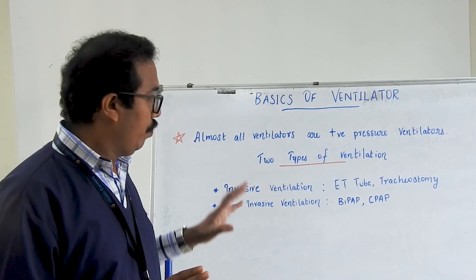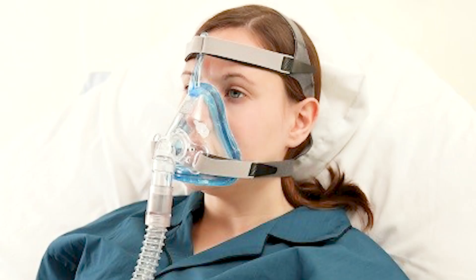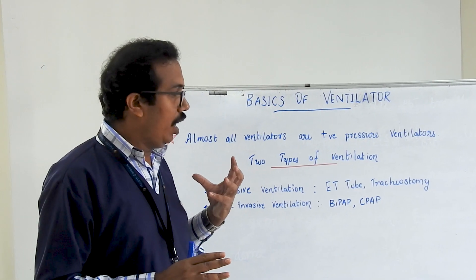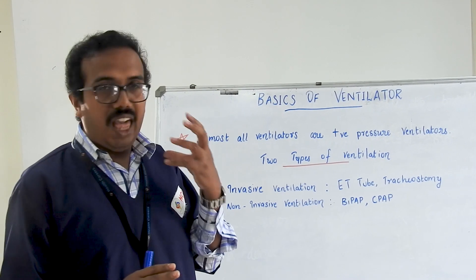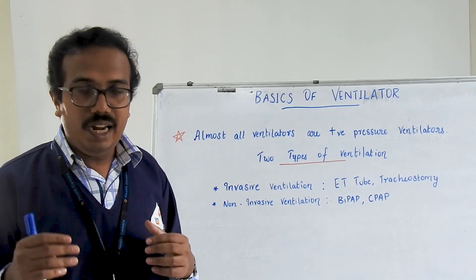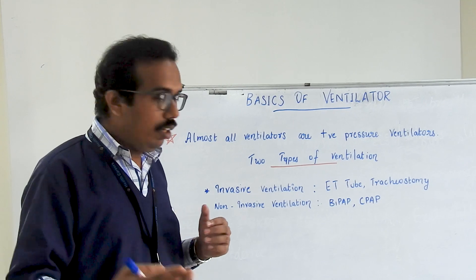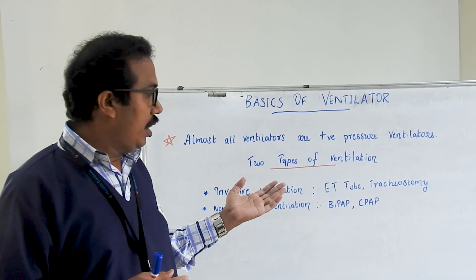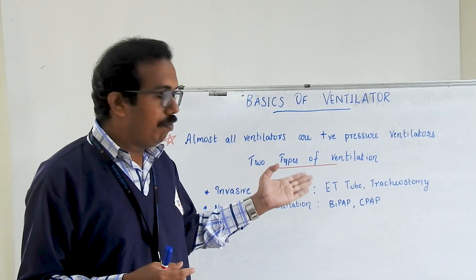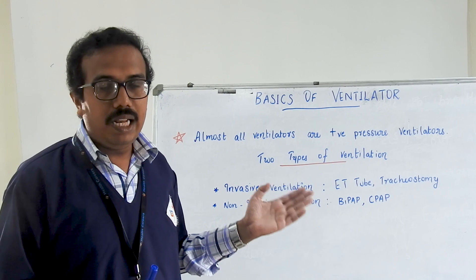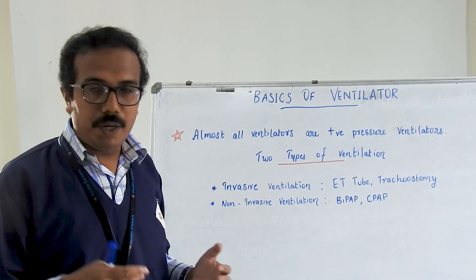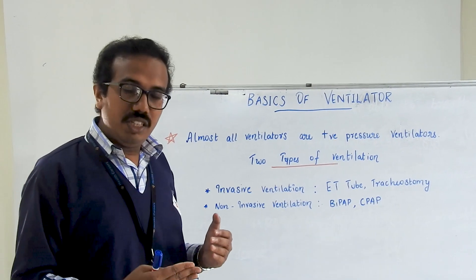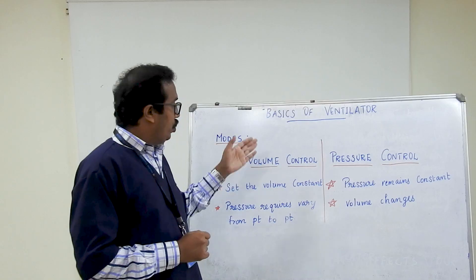In non-invasive ventilation, we give ventilation by using a mask. We keep the mask airtight and with the help of the ventilator, we give ventilation. Examples of that are BiPAP and CPAP — bi-level positive airway pressure ventilation and continuous positive airway pressure ventilation.